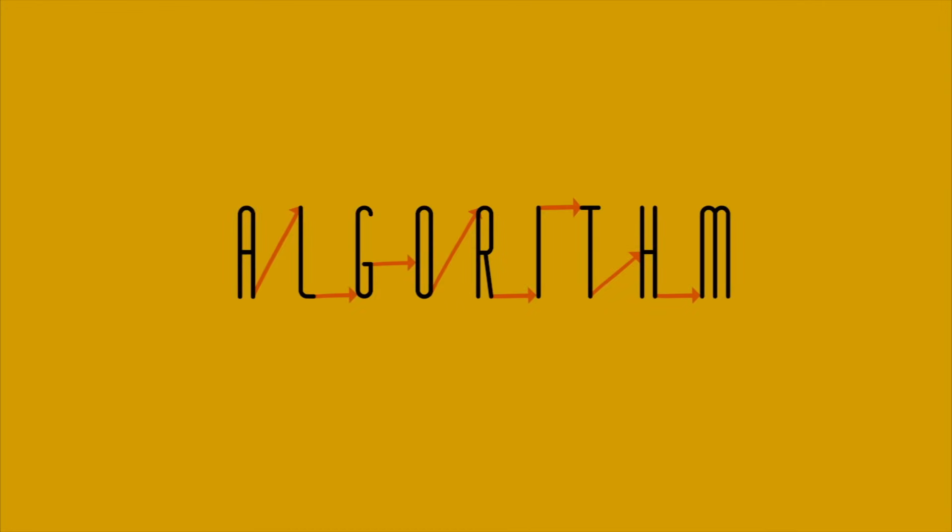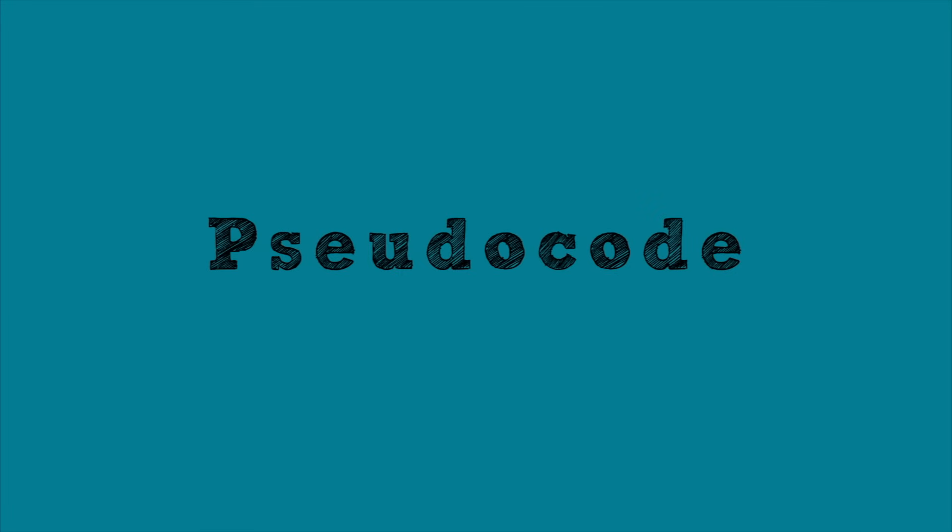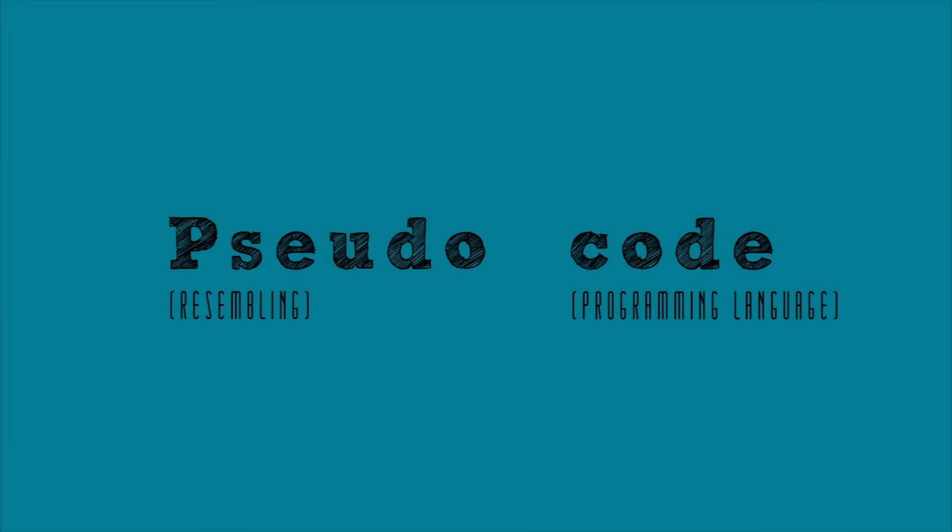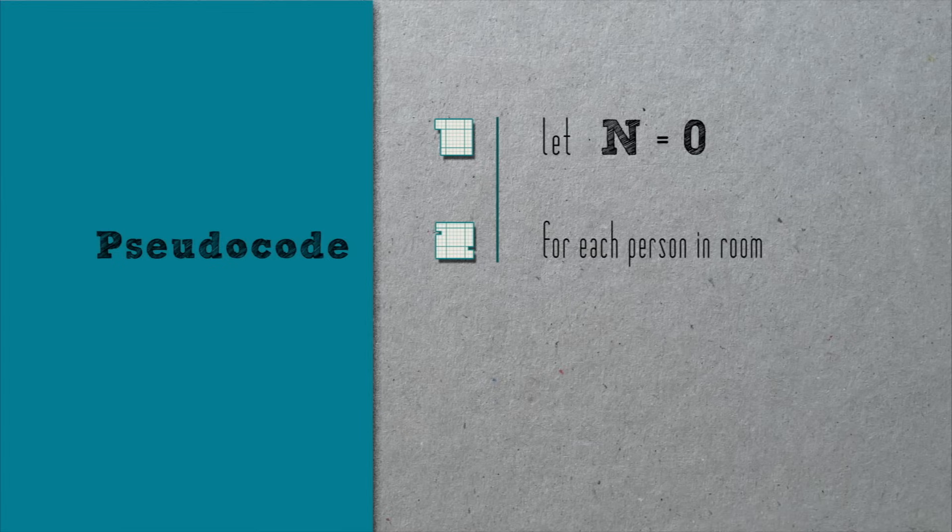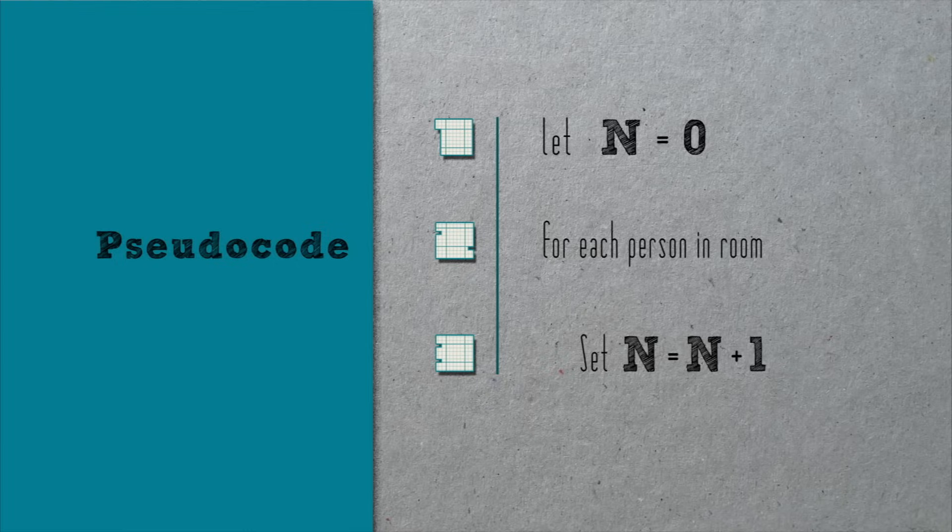Well, that's an algorithm. In fact, let's try to express it a bit more formally in pseudocode, English-like syntax that resembles a programming language. Let n equal zero. For each person in room, set n equal to n plus one.